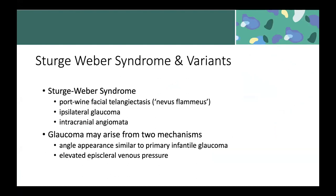In Sturge-Weber, we know there are ipsilateral facial telangiectasias — the nevus flammeus — and usually the affected side will have a lateral glaucoma. Some other vascular anomalies that affect both sides can come with bilateral affection and bilateral glaucoma. It also often comes with intracranial angiomata. The glaucoma arises from two different mechanisms. Some very young children have glaucoma because their angle is not developed correctly, similar to primary congenital glaucoma.